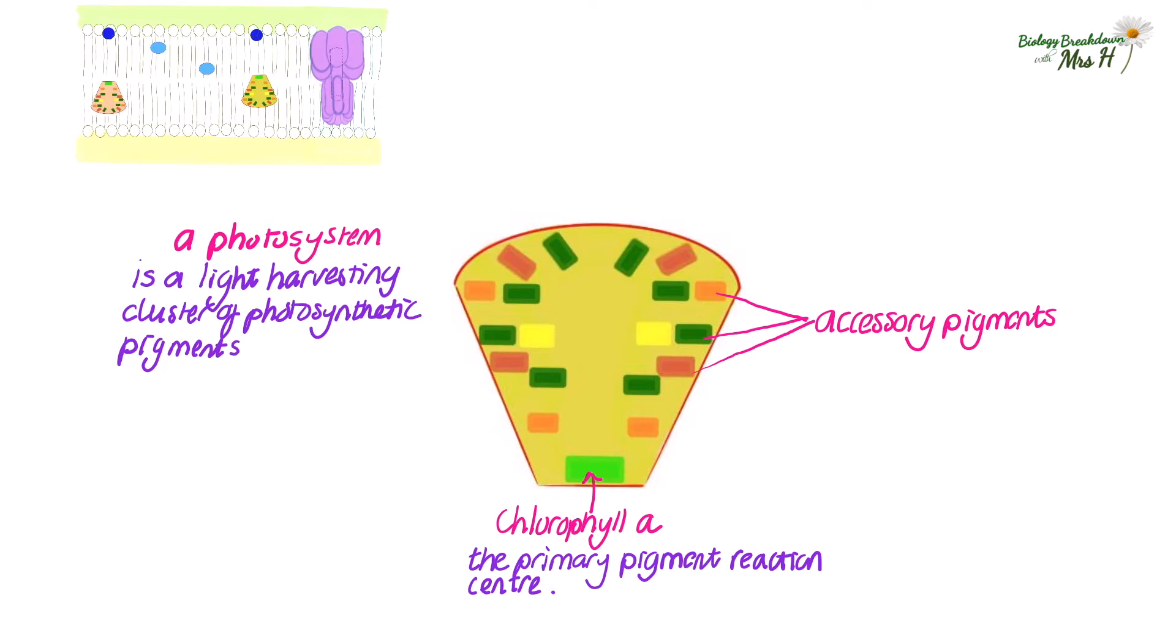So this could be a chlorophyll A molecule whose peak of absorption is light of the wavelength 680 nanometres and we would call that P680. And if its peak absorption is light of a wavelength of 700 nanometres we would call that P700.